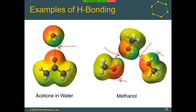To have hydrogen bonding, you have to have a hydrogen — usually represented by a white or very light gray color in ball-and-stick models — attached to an oxygen, nitrogen, or fluorine. Oxygens are represented by red. That hydrogen attached to the nitrogen, oxygen, or fluorine then interacts with another nitrogen, oxygen, or fluorine from a neighboring molecule.